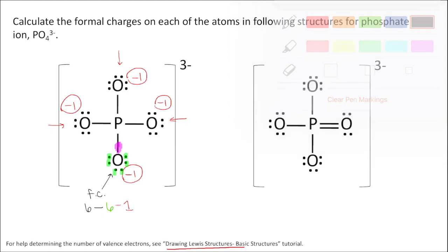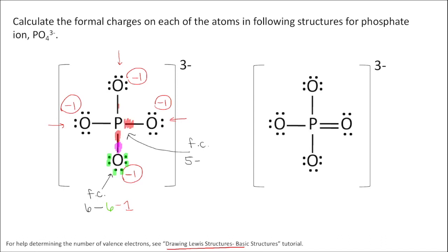Now let's look at the phosphorus atom. Phosphorus has five valence electrons, there are no lone pairs, and it has four bonds, so one electron from each bond gives four electrons assigned to it. The formal charge on phosphorus is five minus four, which is plus one. So in the left structure the formal charges are negative one, negative one, negative one, negative one, and plus one for phosphorus — summing to minus three, which equals the overall charge on the phosphate ion.